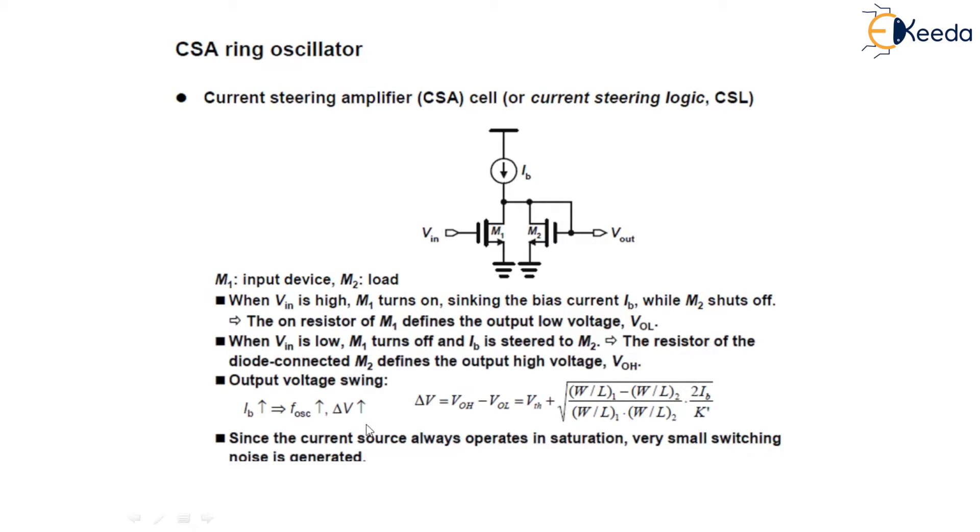Output voltage swing when I_B is high, frequency of oscillation is also high, which in turn del V is also high. Where del V is given as V_OH minus V_OL, which equals V_TH plus square root of (W/L_1 minus W/L_2) upon (W/L_1 into W/L_2) into 2 I_B K. Since the current sources always operate in saturation, very small switching noises are generated.